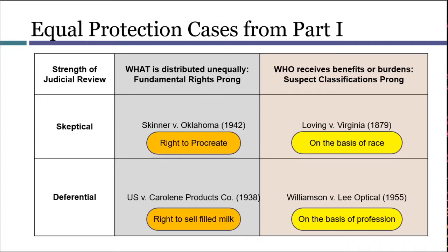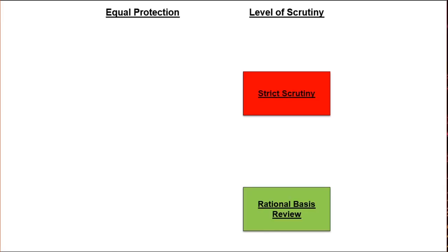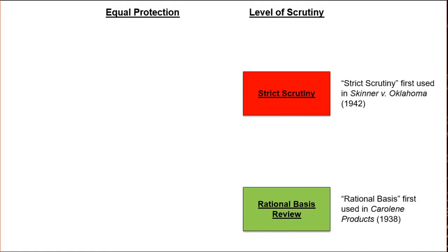But let's think about the principles that would apply if we were presented with a case of first impression. This diagram helps summarize the basic rule. For right now, we can start with two levels, typically known as strict scrutiny and rational basis review. As you'll remember, these terms originated with Skinner v. Oklahoma and Carolene Products, so those cases can be useful prototypes to keep in mind.